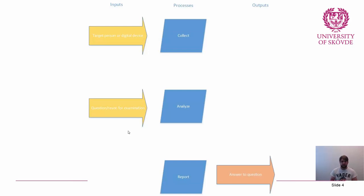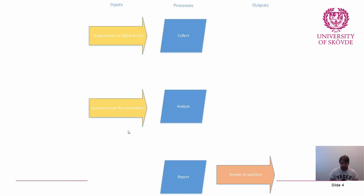When you've found your artifacts during the analysis process, there is the final step: reporting. In the reporting step you account for what you've done, what evidence you uncovered, and draw conclusions in relation to the questions that you were asked. The output of the report is ideally answers to those questions. All of these steps will be discussed in more detail during this lecture series.